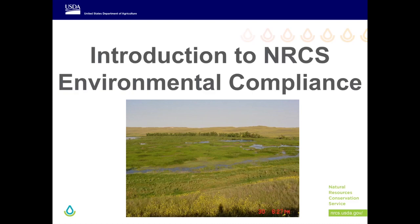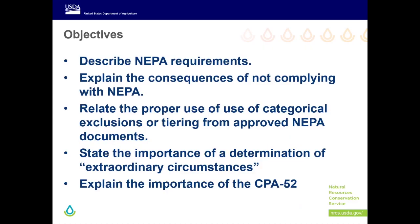Before we start, think about this: how long does it take you to complete an environmental evaluation? Jot down your estimate. It will probably vary between one and six hours — I usually think about four hours. At the end of this lesson, you will be able to: describe the basic requirements of NEPA; explain the consequences of not complying with NEPA; relate the proper use of categorical exclusions or tiering from existing NEPA-approved federal documents; state the importance of a determination of extraordinary circumstances; and explain the importance of the CPA 52 as NRCS's environmental evaluation tool.